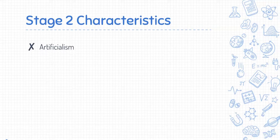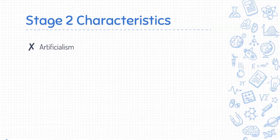Artificialism is displayed during this stage — that is the idea that people create certain parts of the world around them, such as the trees or the weather. A child might believe that her parents can somehow stop the thunder during a storm, and not understand when her parents do not comply with her request to do so.